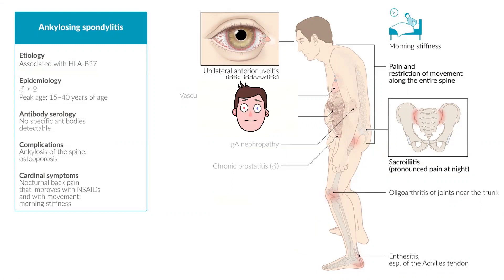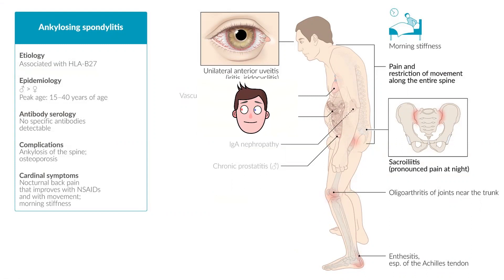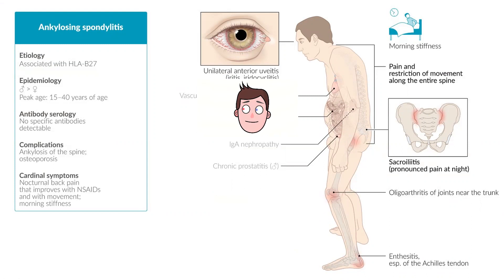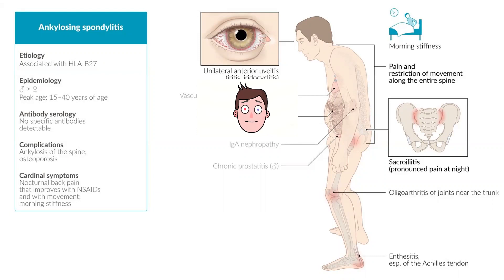One symptom is unilateral anterior uveitis. Unilateral means on one side, anterior is the front, and uveitis is inflammation of the uvea — the middle layer of the eye containing the iris, choroid (the blood supply of the eye), and the ciliary body which controls lens adjustment. You'll get a red eye and blurry vision in one eye.